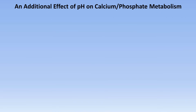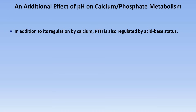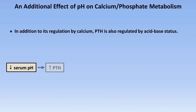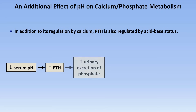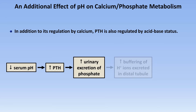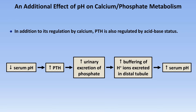There is one final physiologic mechanism to mention, which further links the endocrine and renal systems: the effect of pH on calcium phosphate metabolism. In addition to its regulation by calcium, PTH is also regulated by acid-base status. Decreased serum pH — that is, a state of acidemia — leads to increased PTH secretion. PTH acts on the renal tubules to increase urinary excretion of phosphate, which then increases the buffering capacity of hydrogen ions excreted in the late distal tubule. With more hydrogen ions buffered, more hydrogen ions can be excreted, and thus serum pH is increased closer to normal.